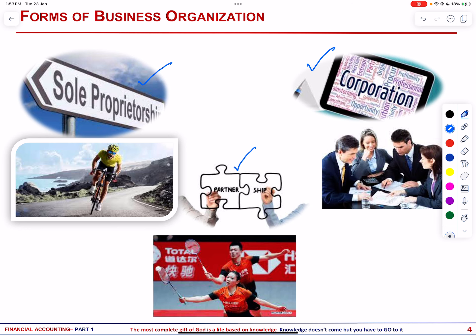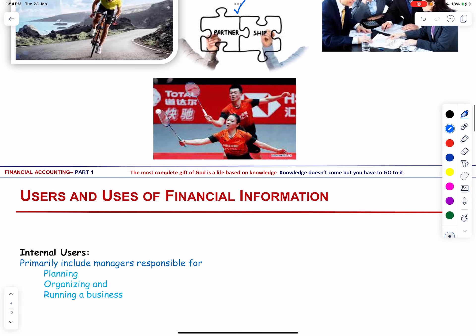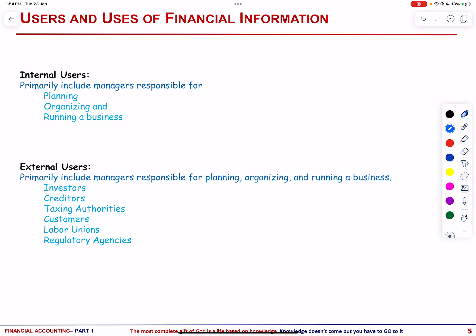Next, let us talk about the users and uses of accounting information. The purpose of financial information is to serve as a crucial tool for decision making within organizations. Accounting as an information system plays a pivotal role in identifying, recording and communicating the economic events of an organization to a diverse group of interested users. Internal users primarily include managers responsible for planning, organizing and running the business, spanning various functions such as marketing, production and finance.